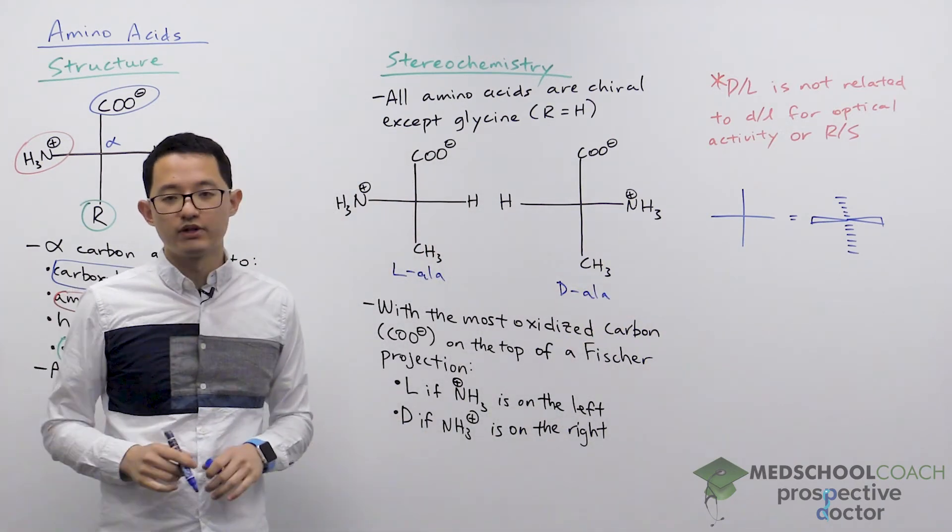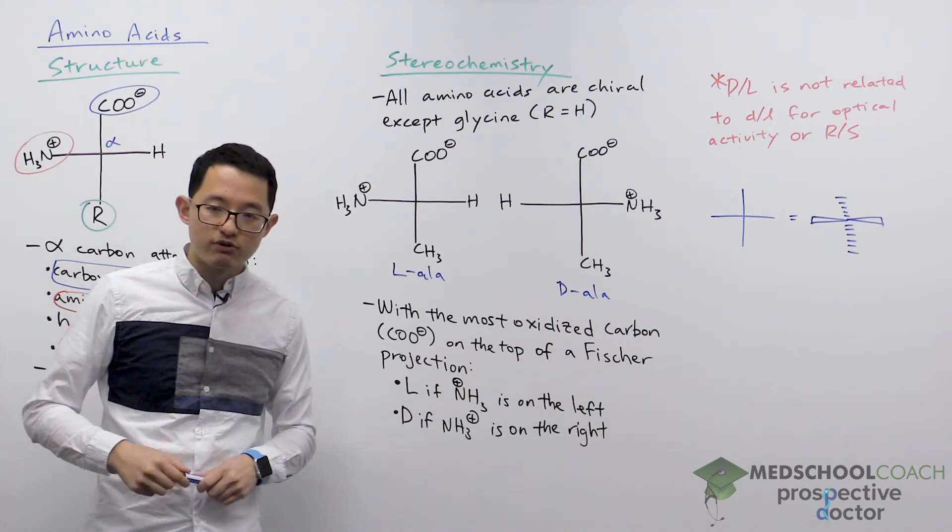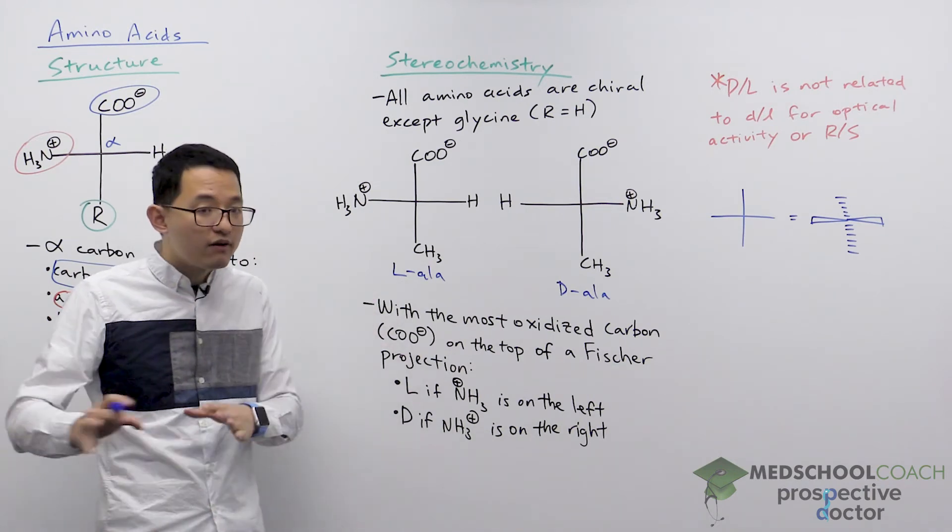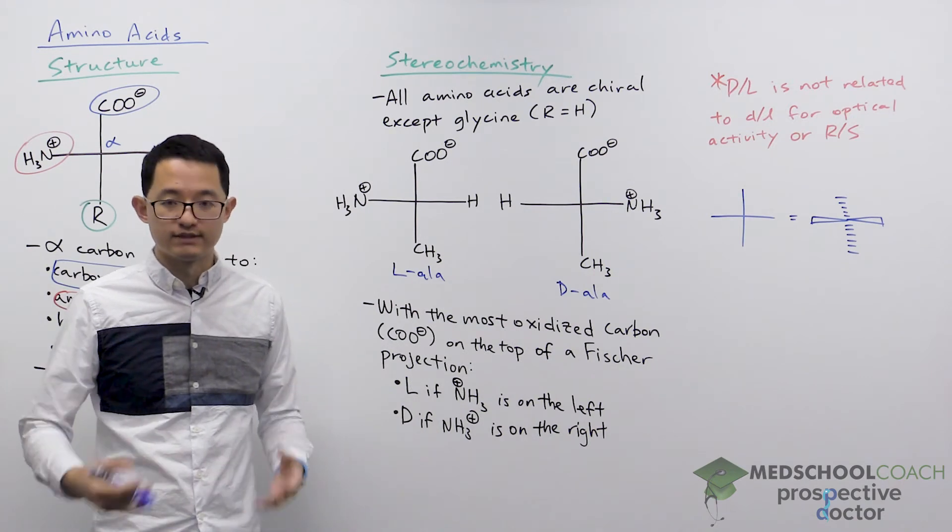These differences are important and we see this in biology. The vast majority of amino acids and proteins are L amino acids. There are a few but not very many D amino acids in proteins of cells.